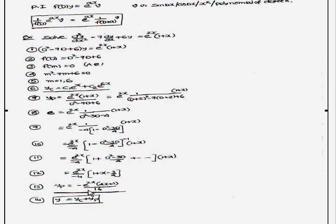If you simplify this problem, you will get this particular integral. So therefore general solution is y = complementary function + particular integral.